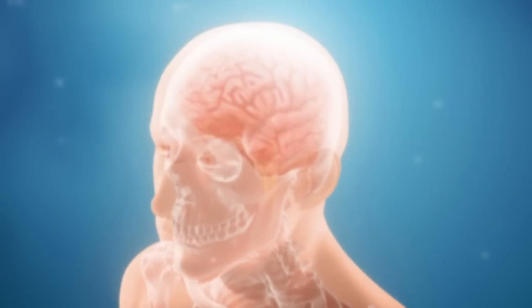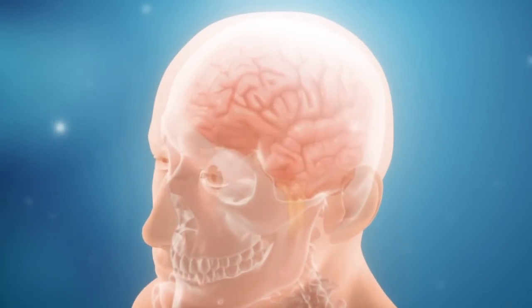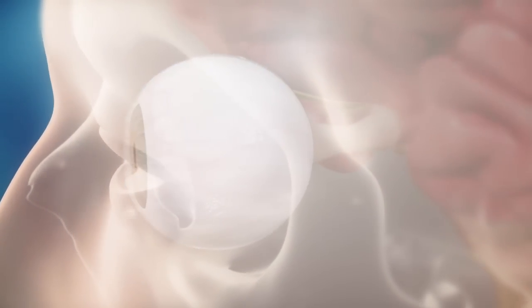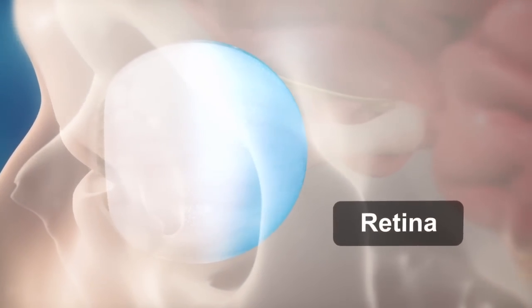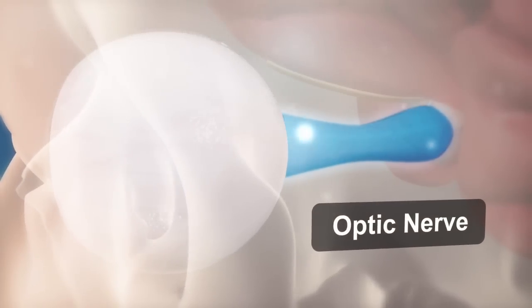Vision loss can be caused by defects or damage almost anywhere within the visual system. This includes the front of the eye and the light-sensitive tissue at the very back of the eye, called the retina. Some conditions involve problems with the optic nerve, the cable that carries visual signals deep within the brain.